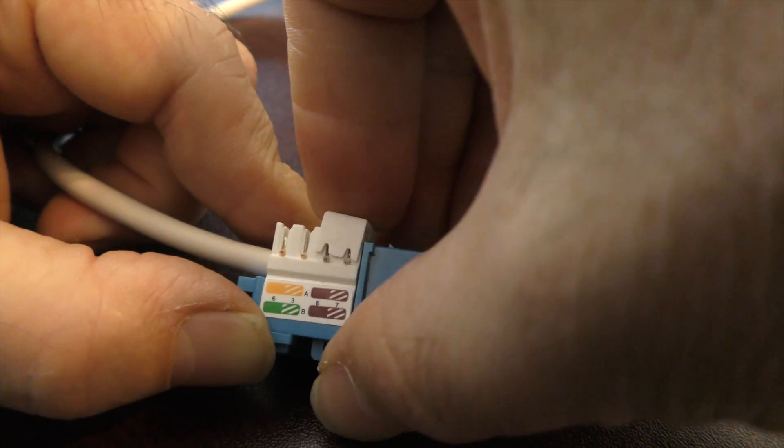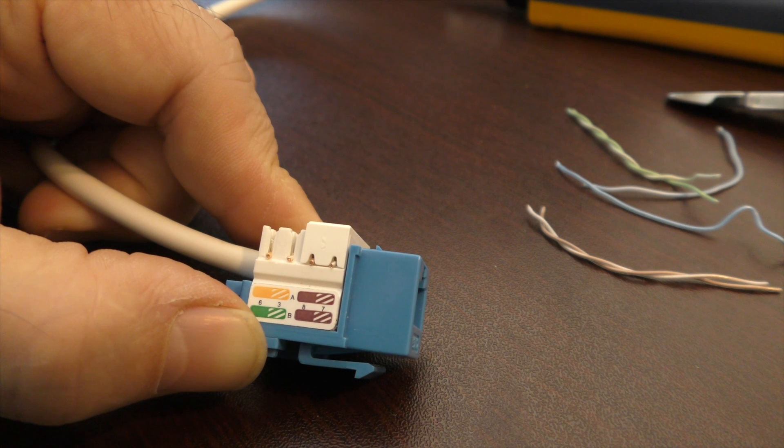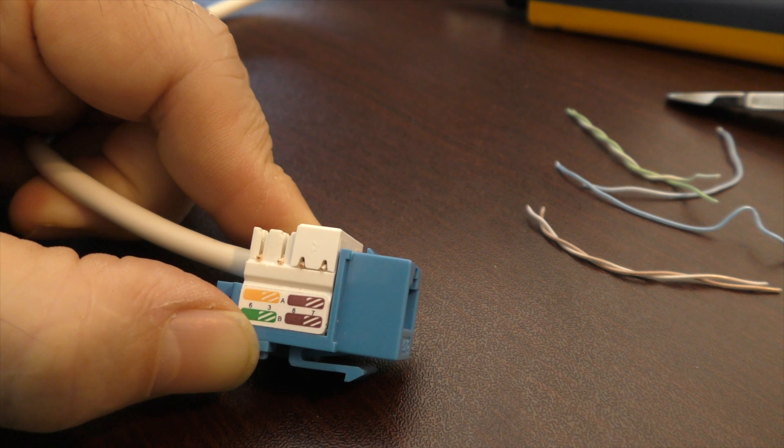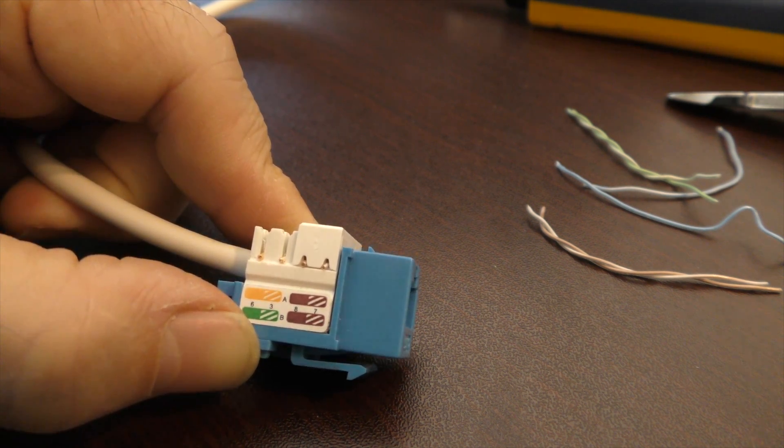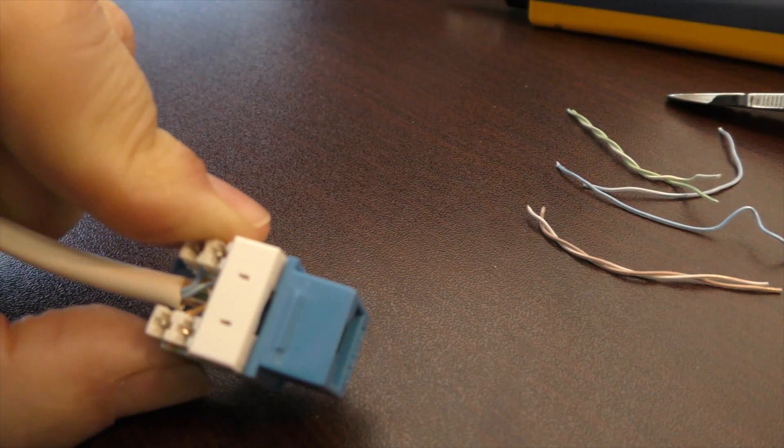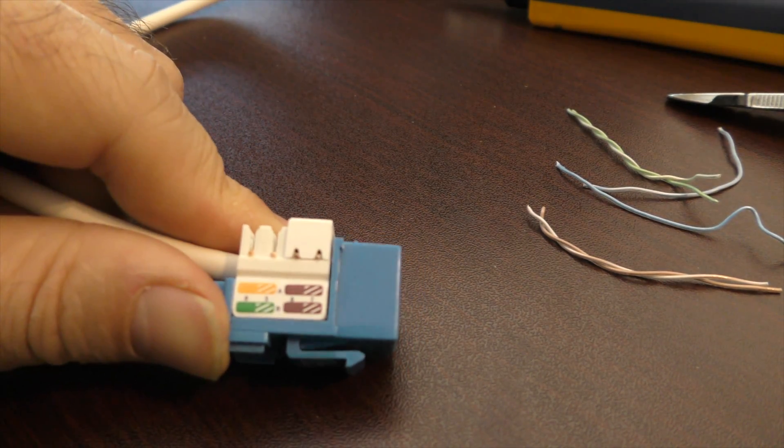And then your kit or your jack should come with these little dust covers. Somebody had said in one of the comments that they didn't like this type of connector because the cables kept falling out or pulling out, but if you use these little covers like I just put on there, you shouldn't have that problem.